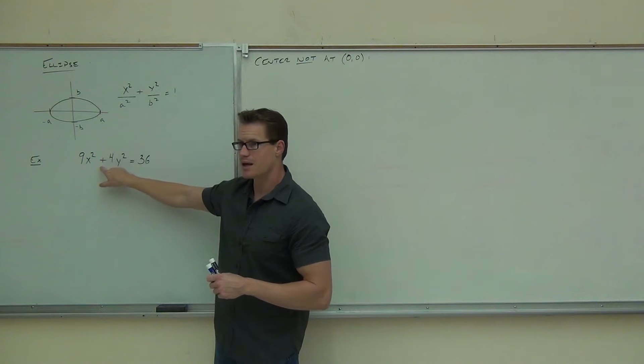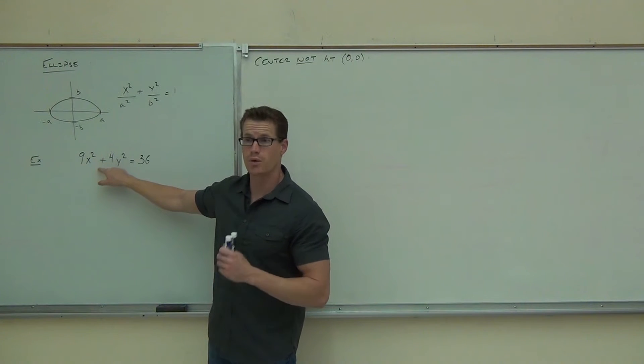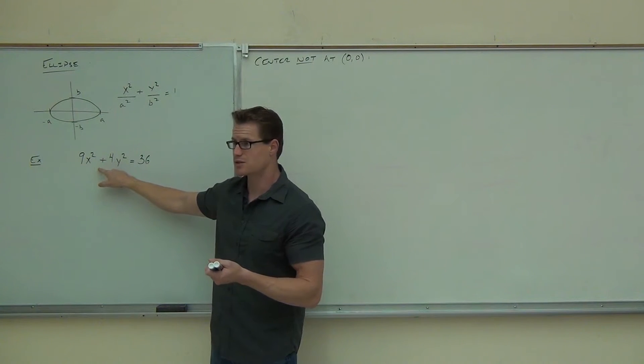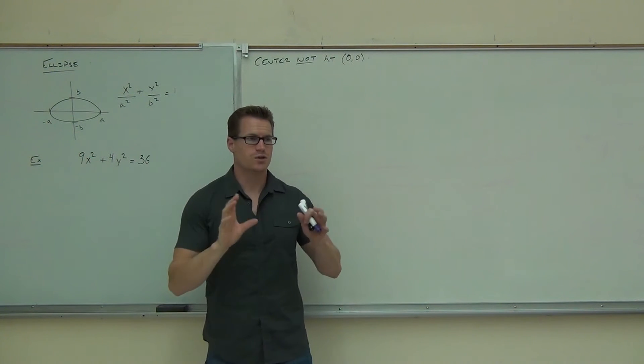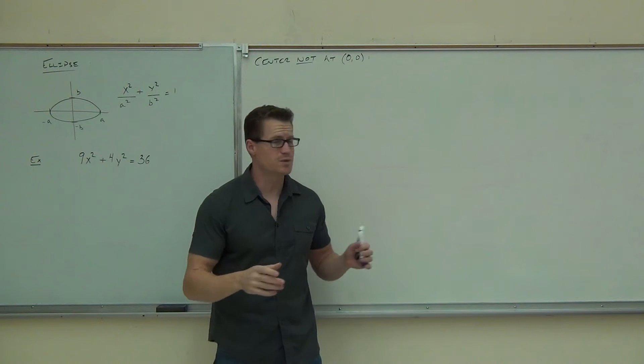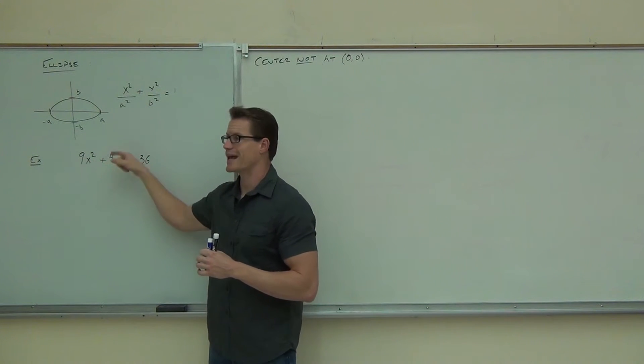I can say a circle or an ellipse because it's got a plus right here. We're going to find out in a minute, if that thing changes to a minus, we're going to have a different shape altogether. It's not a parabola because parabolas don't have y squared.